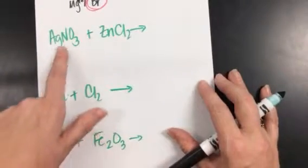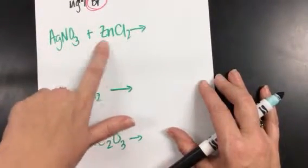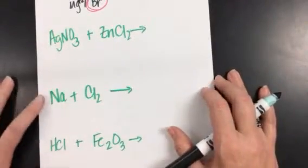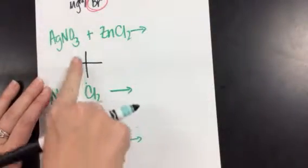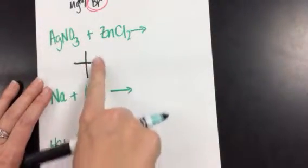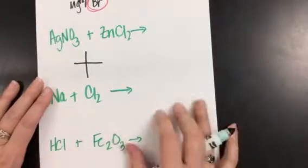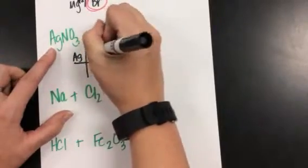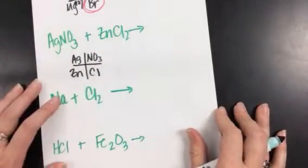Now this next one — I have a compound and a compound, so that means I have a double replacement type reaction. I do the same general thing as before where I have my cations on one side and my anions on the other. I'm going to write them down first, then find their charges. So I have silver and I have nitrate; I have zinc and I have chlorine.